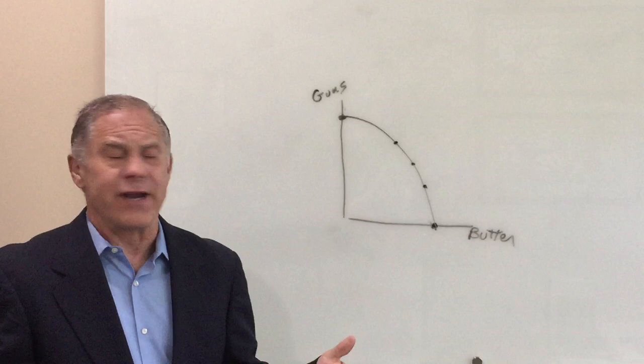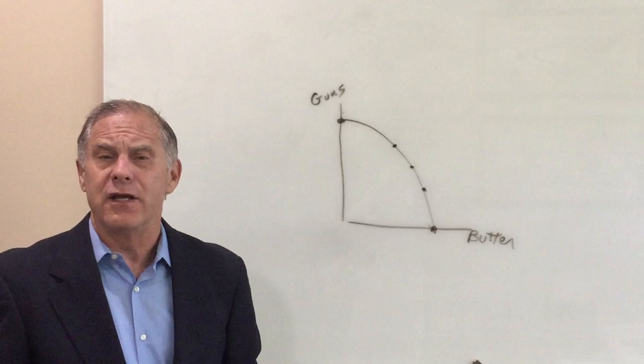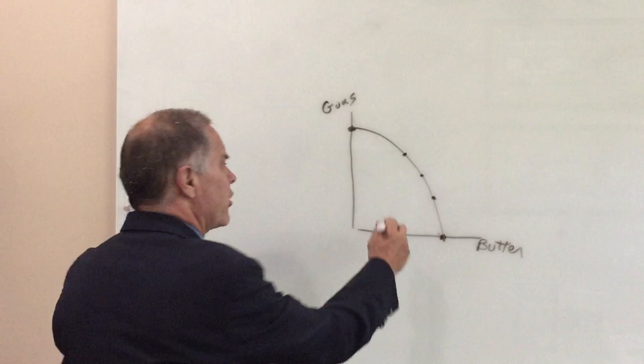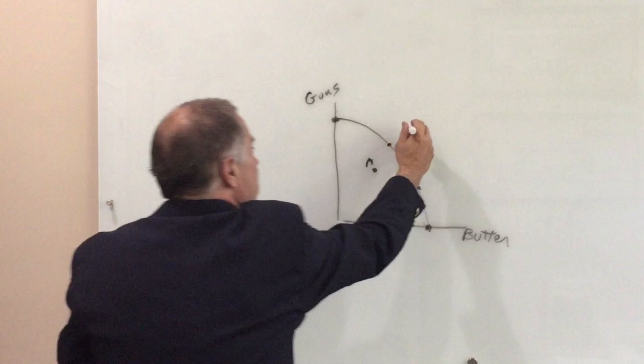Which is a better point on the curve? We don't judge that. All of these are efficient points because all of your resources are being used. What if you have unemployment, inefficiency, or don't use all your resources? Then you'd be somewhere in here like point A.